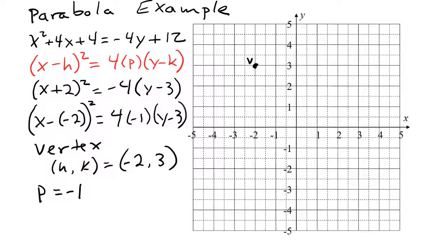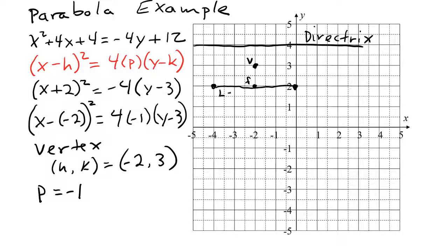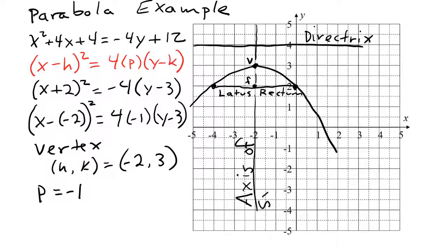The focus is one space below the vertex, and the directrix is one space above the vertex. This makes the focus and the directrix two spaces apart, so from the focus we go two spaces to the left or right to find the ends of the latus rectum. This allows us to draw the parabola and, as a final touch, add the axis of symmetry passing through the focus and the vertex, perpendicular to the directrix.